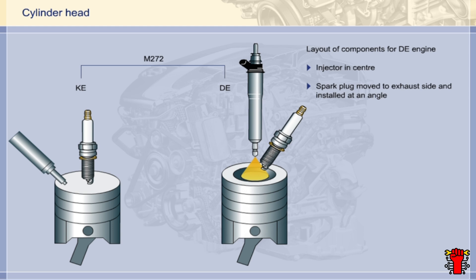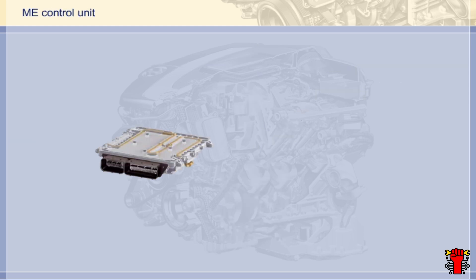Now let's have a look at the engine electronics control unit. On the DE engine, it is exposed to higher levels of heat. The output stages of the piezo fuel injectors incorporated into the control unit, for example, generate an operating voltage of up to 160 volts. To dissipate the heat, the ME control unit is therefore liquid-cooled.